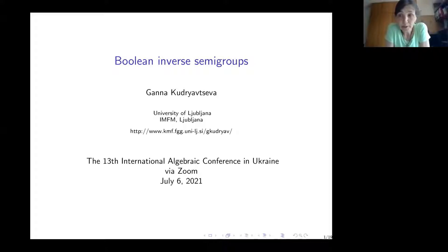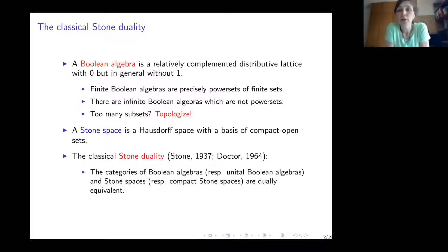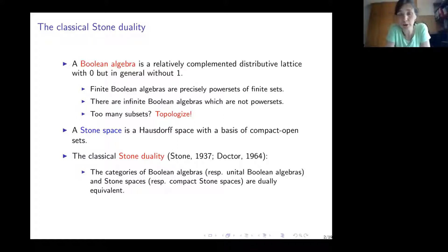Today I have opted to talk about Boolean inverse semigroups. Let me first introduce the topic and start from recalling the classical Stone duality. A Boolean algebra is a relatively complemented distributive lattice which has a bottom element but not necessarily a top element. In the literature, such Boolean algebras are often called generalized Boolean algebras.